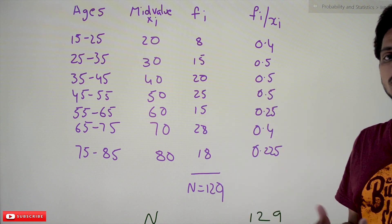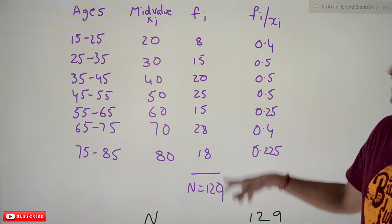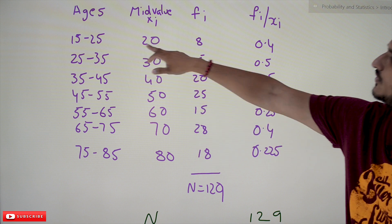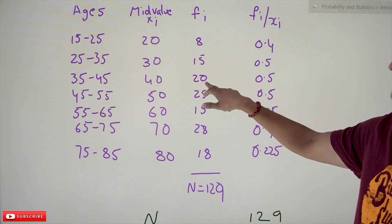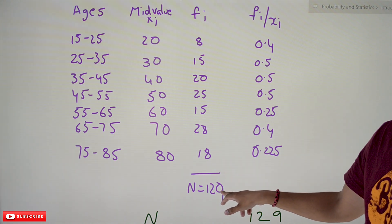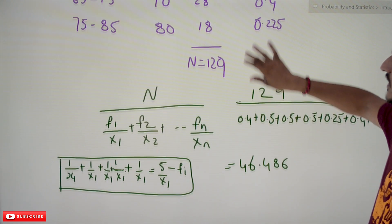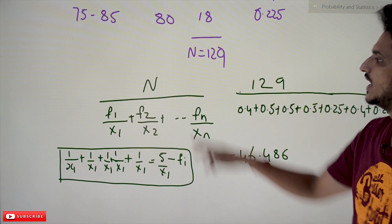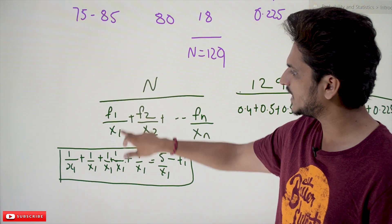15 to 25, how many members are there? 8 members. 15 members, 20 members. That's why total, how many numbers are there? 129 data points. So how to write the harmonic mean equation? Capital N, 129, divided by FI by XI.